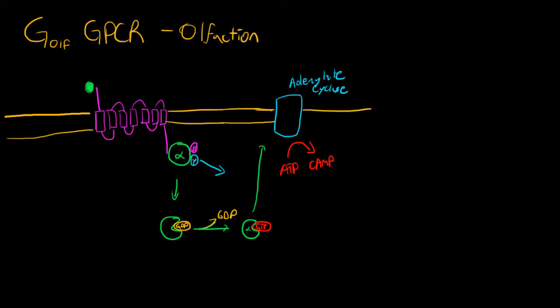And as you might remember, cyclic AMP is a super important secondary messenger. It's going to bind and interact with a lot of different things. However, what we are concerned about in this particular pathway, in these olfactory sensors, is that we're going to bind to this membrane-bound ion channel.